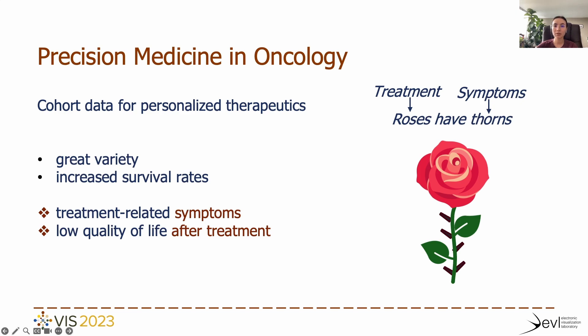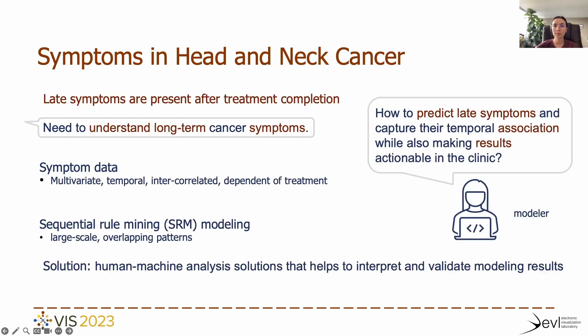In other words, even though cancer treatment is supposed to have positive outcomes — for which we use the rose as a metaphor — it can negatively affect patients' quality of life, like the rose's thorns. In head and neck cancer, interdisciplinary teams seek to better understand what determines late symptoms which are present after treatment completion.